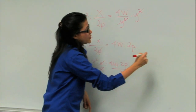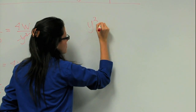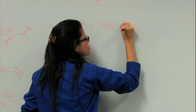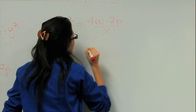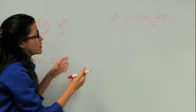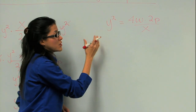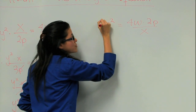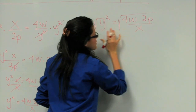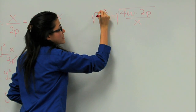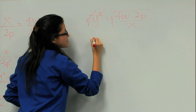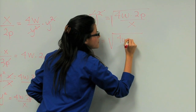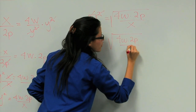So now I'm going to continue over here. y squared equals 4w times 2p over x. And again, remember, we're trying to have y by itself. So how do we get rid of the square? We have to take the square root of this, and again, we have to do it on both sides. That way we can cancel the square. And now we have y equals the square root of 4w times 2p over x.